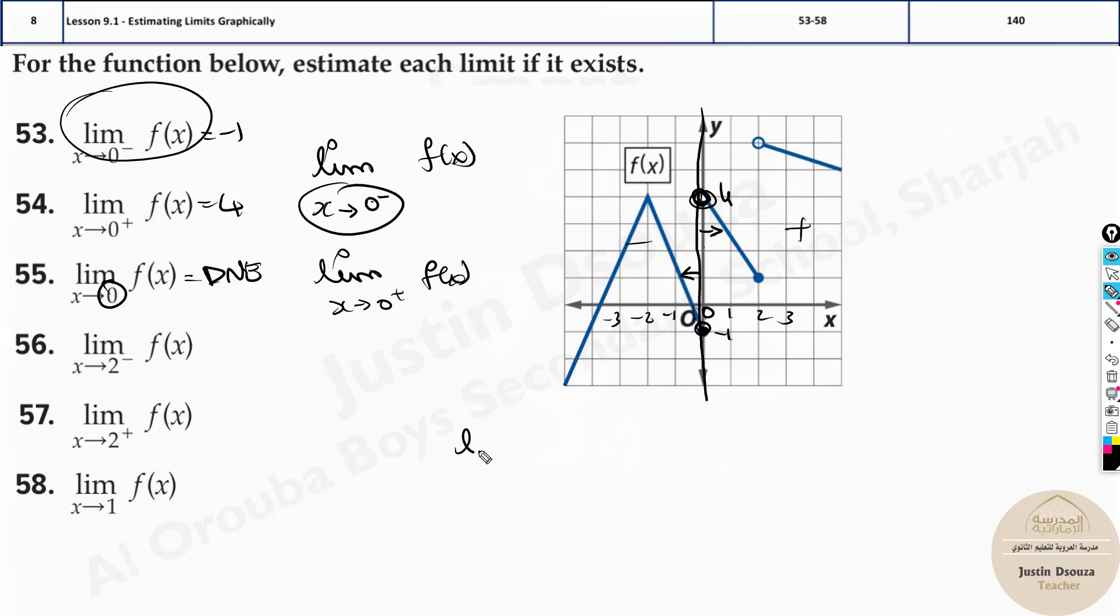Why? In order, there is a rule. In order for limit as x tends to anything, I'll write 0 now, to exist, f of x to exist, it must be, then there must be limit x as tends to 0 from the left side must be equal to limit as f of x, x tends to the right side.